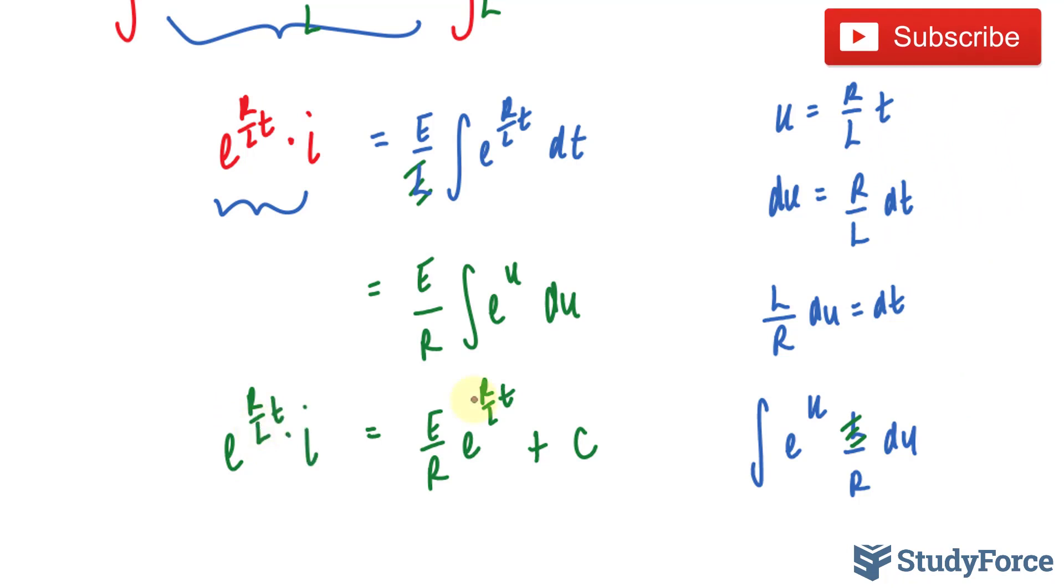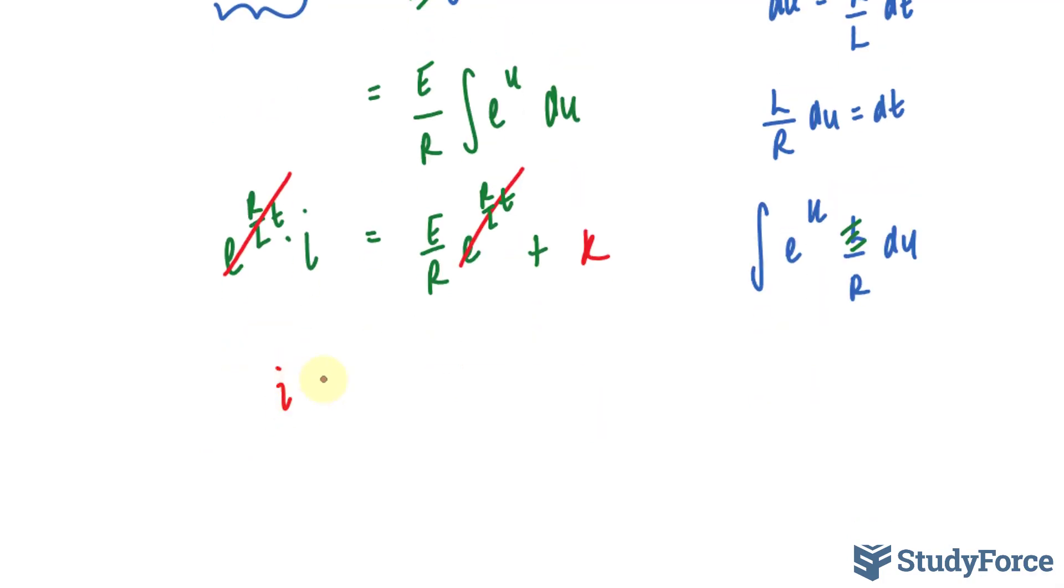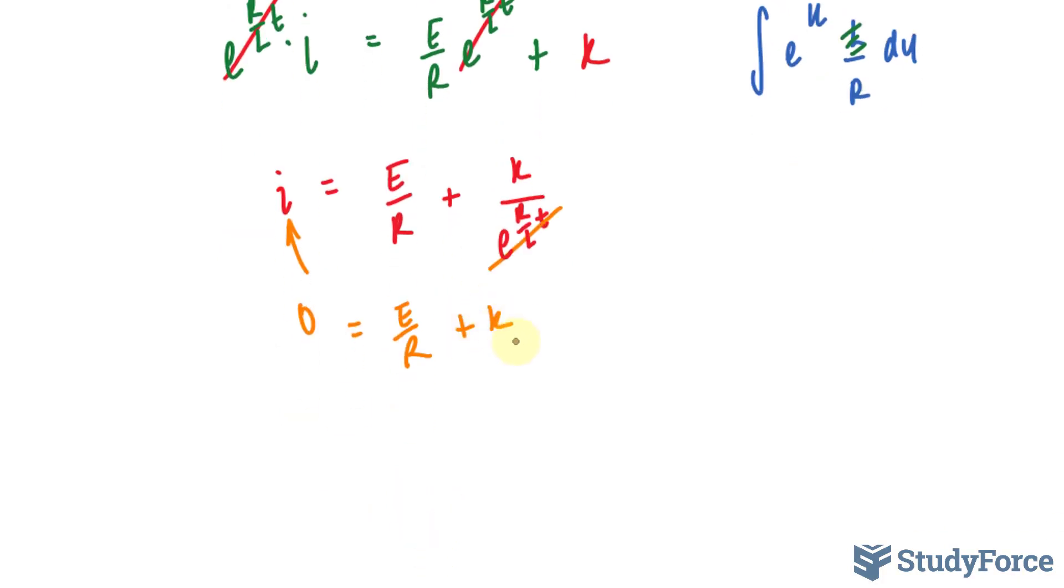Now before we move on to our next step, I just want to replace this C with another constant, because C is usually confused with capacitance when we're talking electricity. So I'll replace that with a K, and then I'll divide both sides by e to the power of R over LT. This will cancel out the following, leaving us with I for current is equal to E over R plus our constant K over e to the R over LT. Now we can find K by replacing I with 0 and T is equal to 0, which was given in the question. So we're replacing I with 0 and T with 0. This becomes 1. We have E over R plus K, gives us finally K is equal to negative E over R.